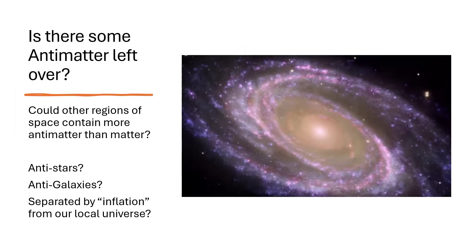Maybe there's a different explanation: that what we're looking at across the universe isn't all matter. Maybe there are anti-stars or anti-galaxies — where regions of the universe that got separated from each other started with over-densities of the other version of matter, going in the opposite direction in terms of spin and charge. Maybe these were separated away from each other by the original Big Bang inflation, and when we look at them they look perfectly normal. The spectrum of the light is the same, the magnetic fields are the same. It would be very hard to tell one from another.